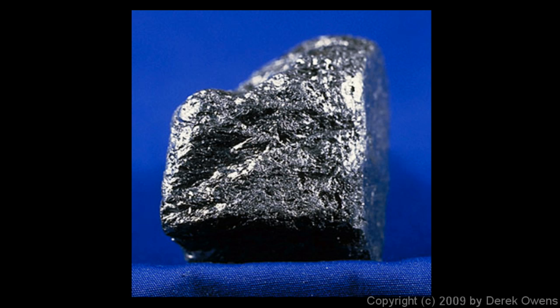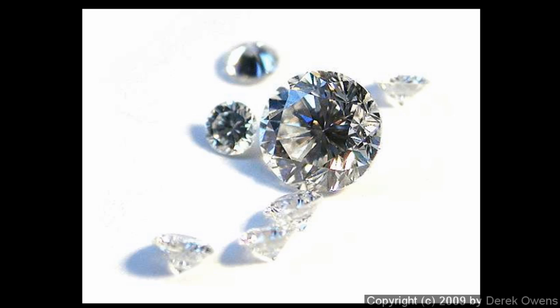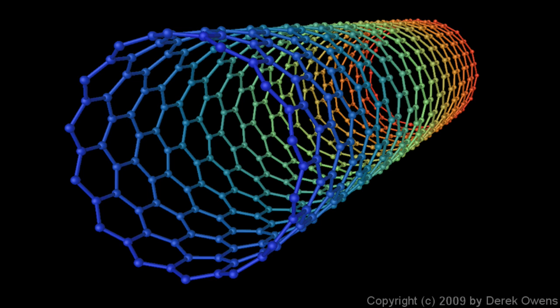Graphite is also very soft. You rub it on a piece of paper and you leave a mark. That's what your pencil is doing. And diamond is one of the hardest substances known, but they're both made of 100% carbon. Carbon can also be arranged in little tiny structures. And there's some very new experimental research going on with carbon nanotubes. And here's a picture.